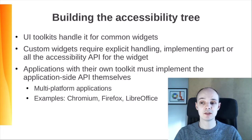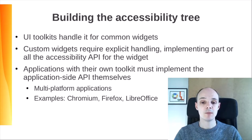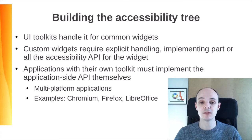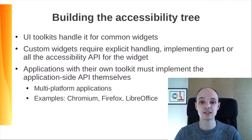UI toolkits handle accessibility for common widgets. For example, application developers don't have to do anything special to make a button accessible. Custom widgets and applications require explicitly handling this, implementing part or all of the accessibility API for the widget. Applications with their own toolkit must implement the application-side API themselves. This is the case for multi-platform applications. Some have internal UI abstractions which are translated to native ones — that's the case of LibreOffice. Others have custom toolkits that render directly using low-level primitives — that's the case of Chromium.